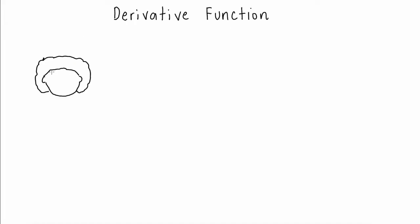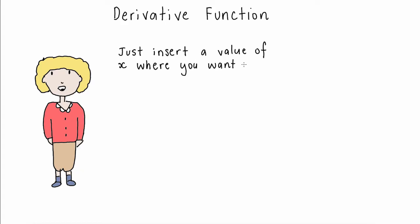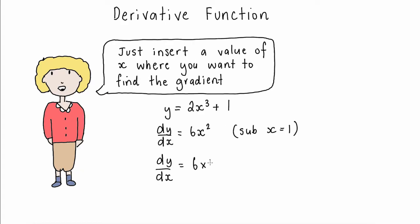Once he had come up with the derivative function or the gradient function, Newton established that it would be really easy to find the instantaneous rate of change on any curve at any point by just inserting a value for x.